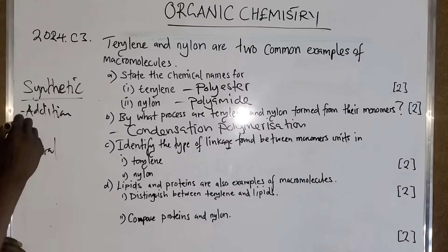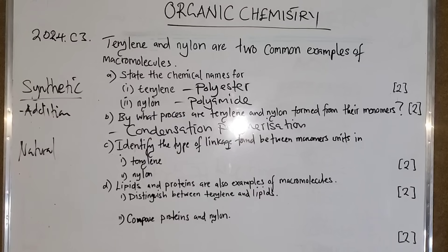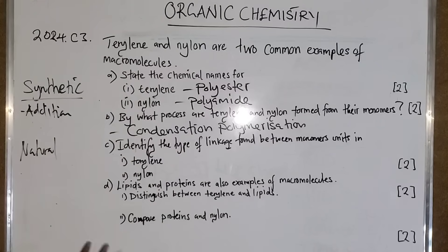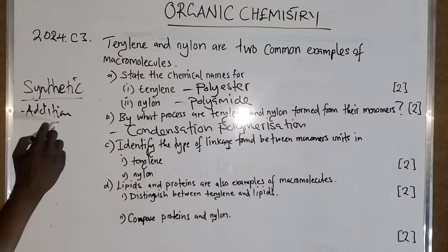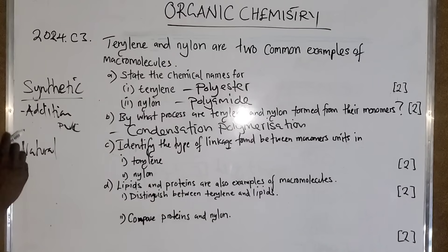Under addition polymerization, you find alkenes — isolated hydrocarbons. For example, ethene reacts to form polyethene, which is an addition polymer. Propene reacts with another propene to form polypropene. You can also find PVC — polyvinyl chloride — which is still under addition polymerization.